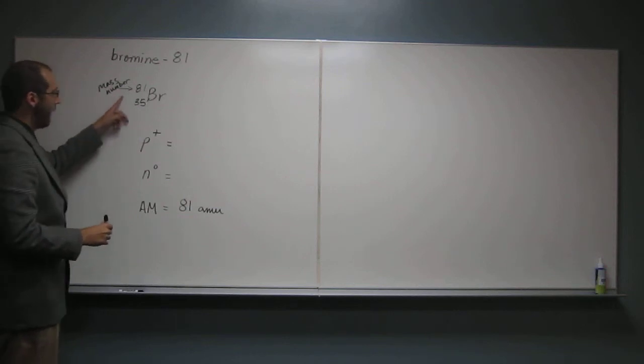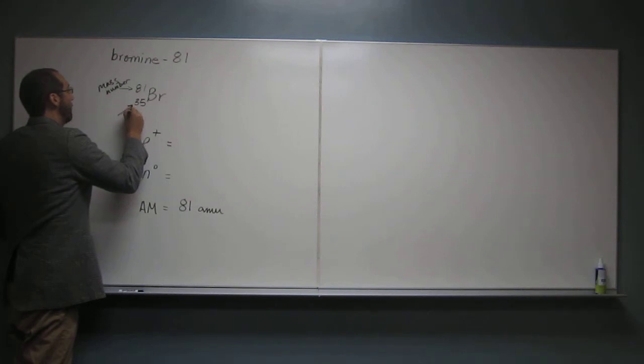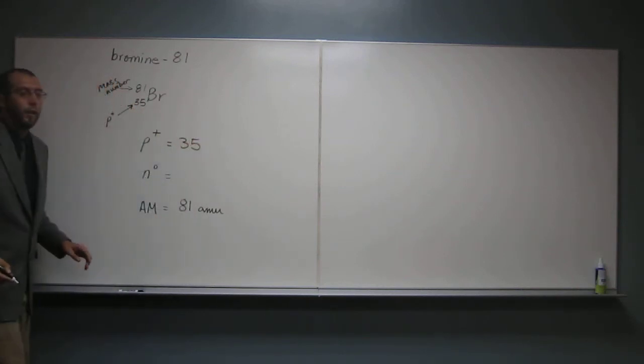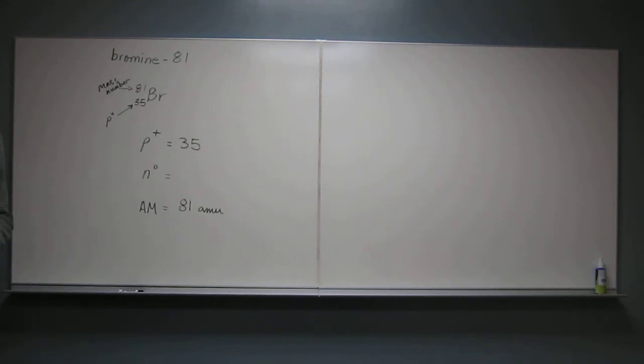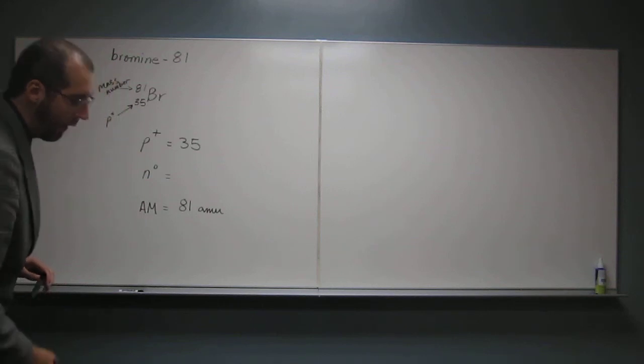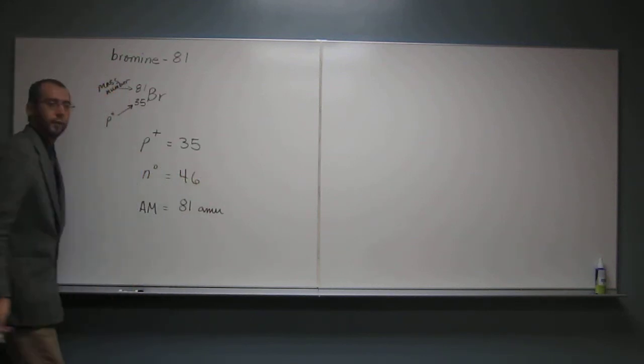So if we've got 81 protons plus neutrons and we said we have 35 protons, how will we figure out the number of neutrons? Subtract. So we take 81 and subtract 35 from it and we get 46.